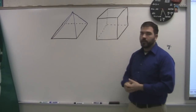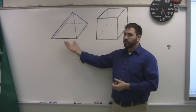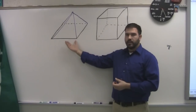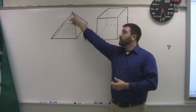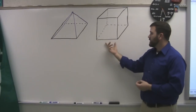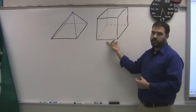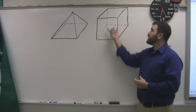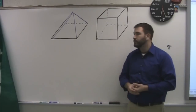A pyramid is a three-dimensional figure that has a base, and all these sides go up to a single point. A prism is a three-dimensional figure where the shape of the base carries all the way through the top of the figure.